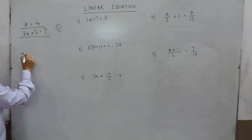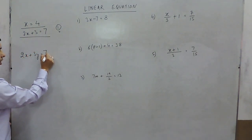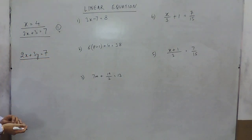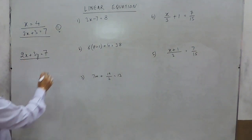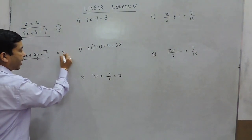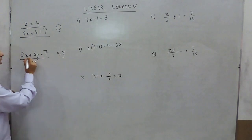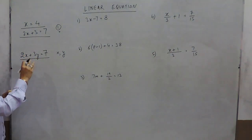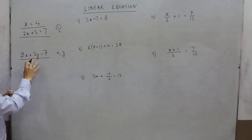If I write something like 2x plus 3y equals 7, now in this equation there are two variables — one is x and one is y. So when there are two variables, we need at least two equations to solve them.